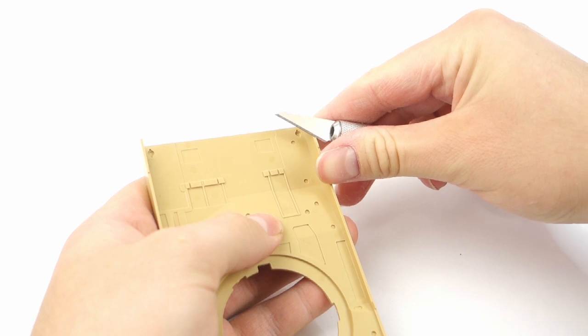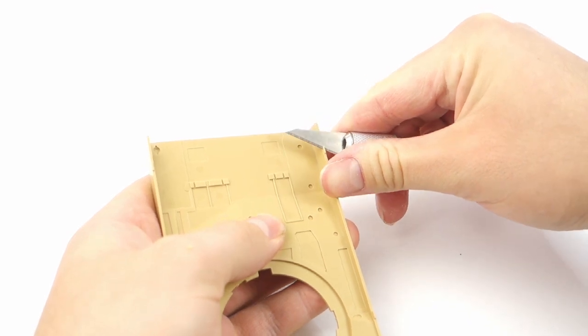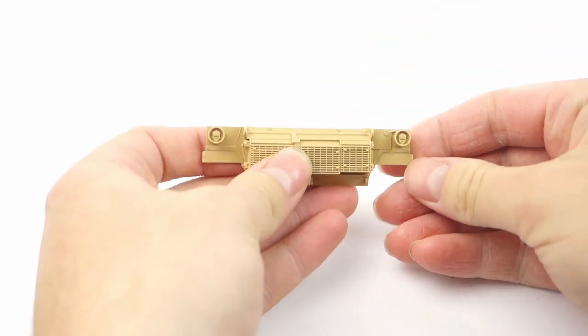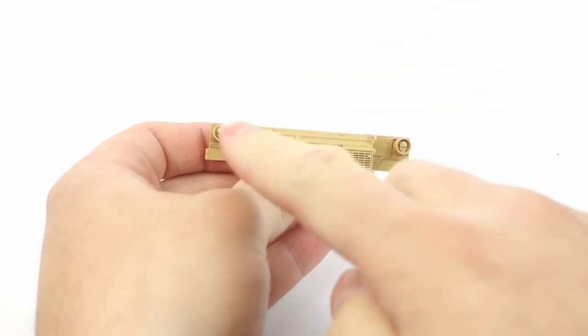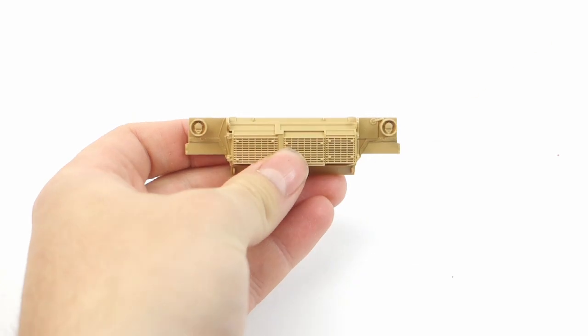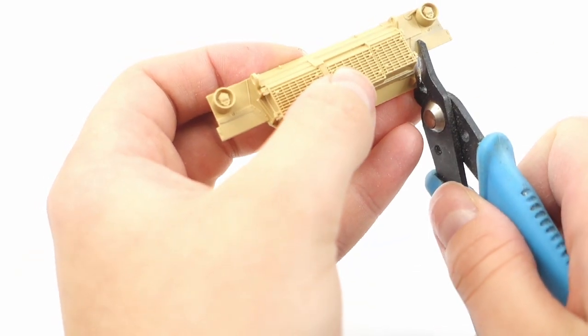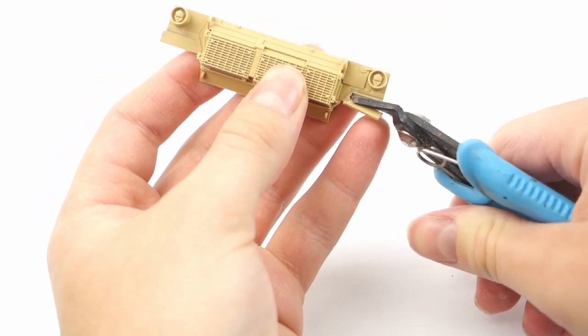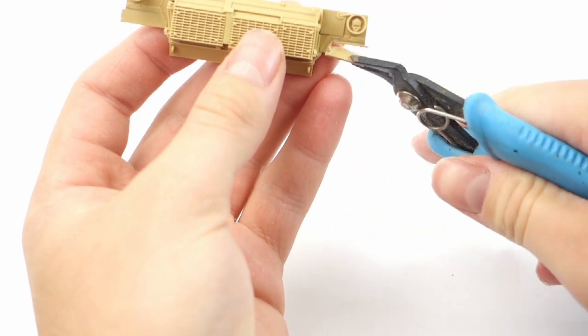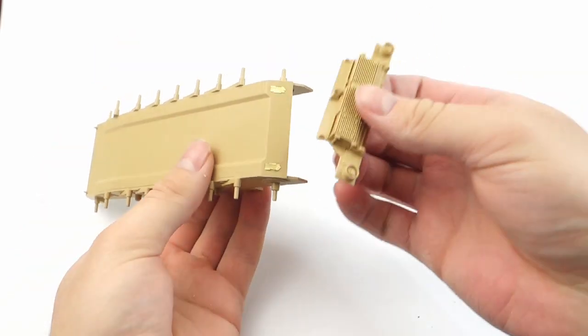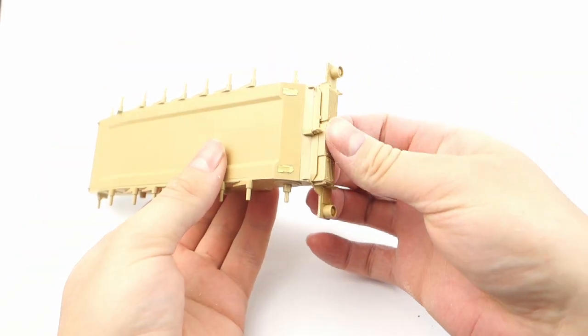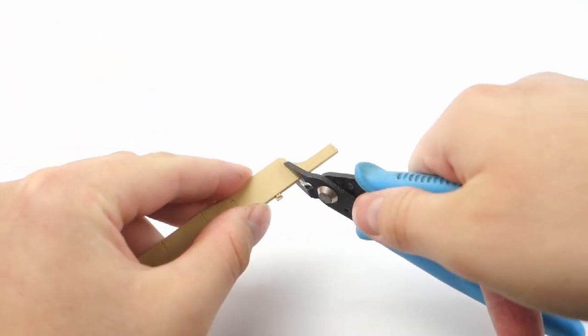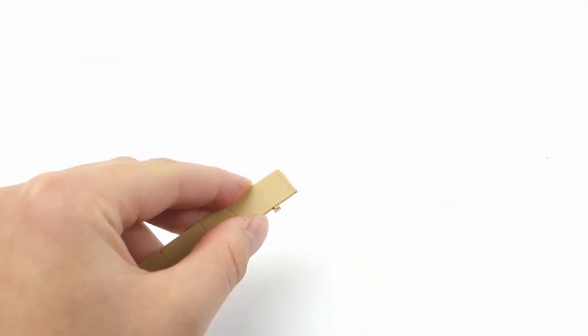I began by modifying the side skirts to match my reference photos. The tanks I'm replicating had the last section of the sand skirts missing, which was a common practice on Abrams. First I had to remove attachment points from the rear because they would be visible now. Then I also removed the parts of the sand covers from the back plate. For this I used side cutters, file, and a hobby blade. After that, I glued the back plate to the hull and moved on to the side skirts themselves. All I had to do was to remove the last section and thin the edge to recreate correct thickness.